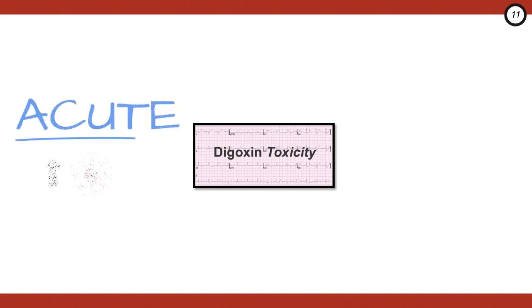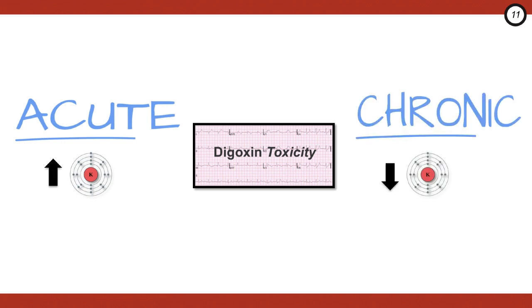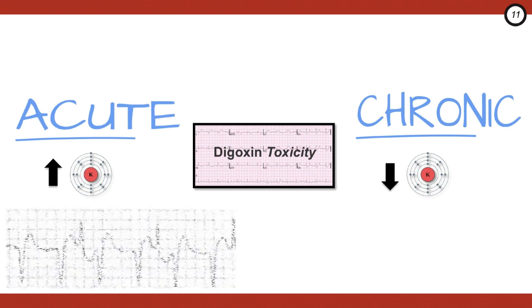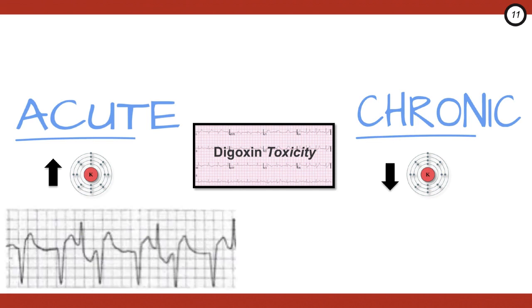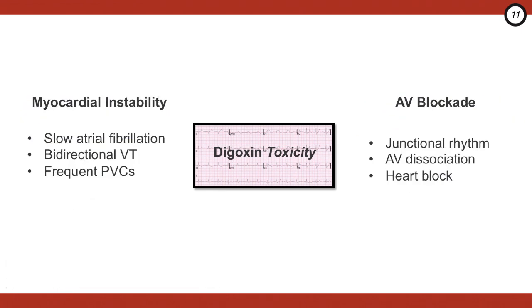The dig toxic patient can have almost any dysrhythmia except for rapid atrial fibrillation. The acute poisonings tend to cause hyperkalemia, so the ECG findings can reflect this, whereas the chronic toxic patients tend to have low potassium. Also, the acute patients are more likely to have ventricular dysrhythmias, specifically bidirectional ventricular tachycardia, as we can see here in the rhythm strip, whereas chronic is more likely to be bradycardic.